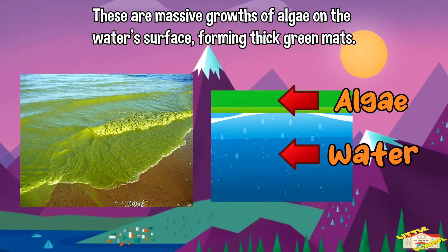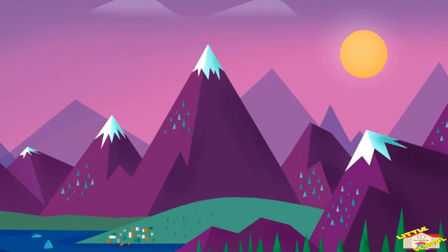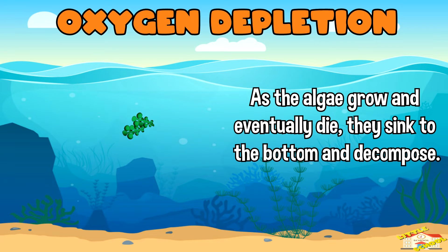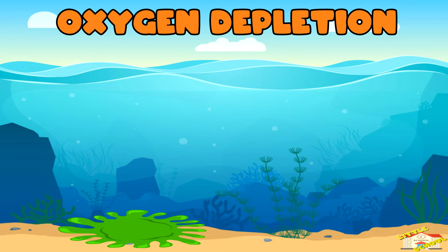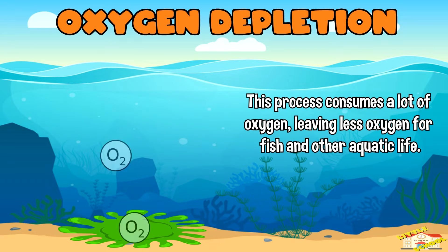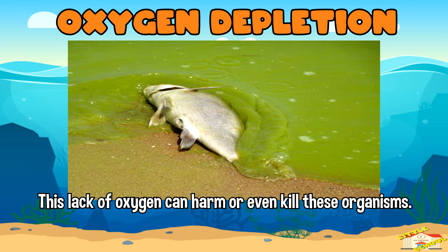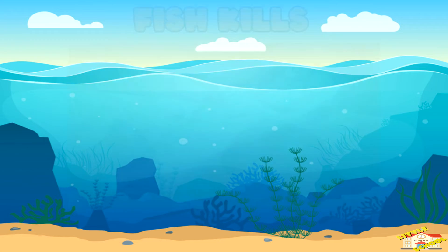Algal blooms are massive growths of algae on the water surface, forming thick green mats. Oxygen depletion: as the algae grows and eventually dies, it sinks to the bottom and decomposes. This process consumes a lot of oxygen, leaving less oxygen for fish and other aquatic life. This lack of oxygen can harm or even kill these organisms.